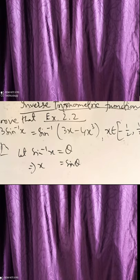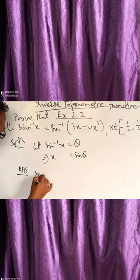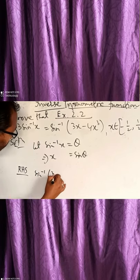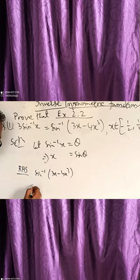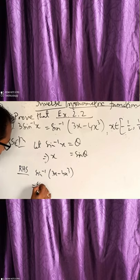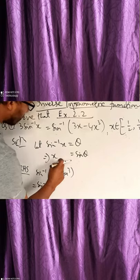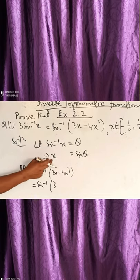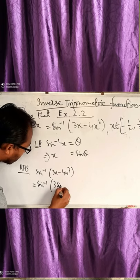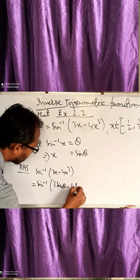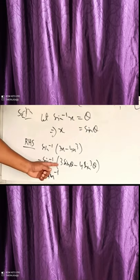We begin from the right hand side. So we can take the right hand side as sin⁻¹(3x minus 4x³). Since x equals sin θ, we substitute to get sin⁻¹(3 sin θ minus 4 sin³θ).